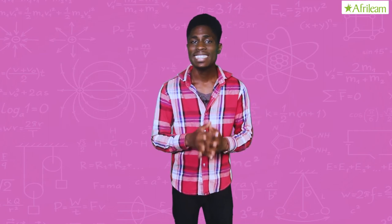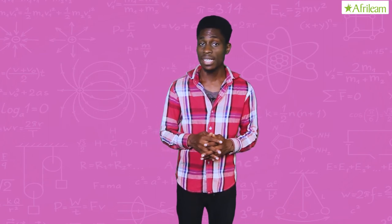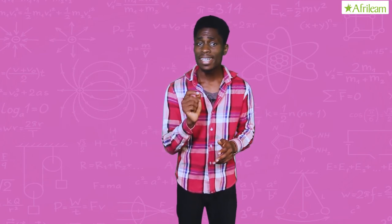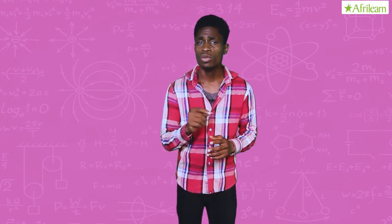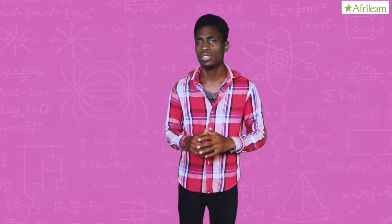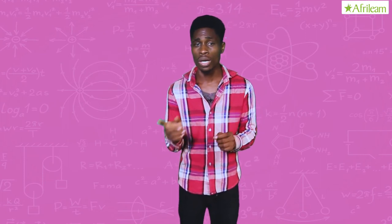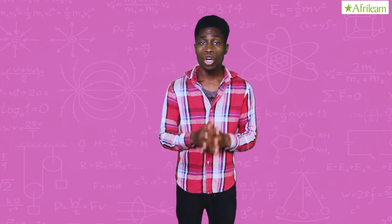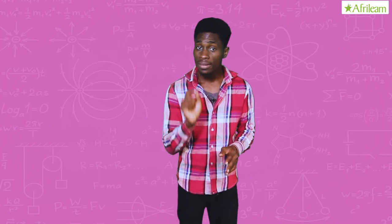The zinc metal at the anode releases two electrons. These electrons travel from anode to cathode through a metal wire that connects both the electrodes. This flow of free electrons produces electricity in the direction opposite to the flow of electrons, that is from cathode to anode. The salt bridge completes the circuit.